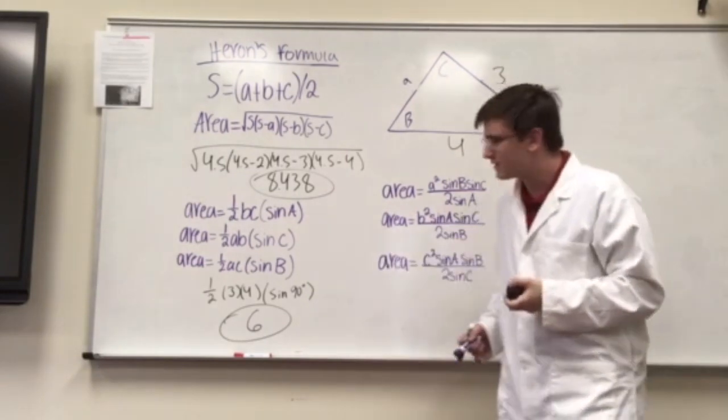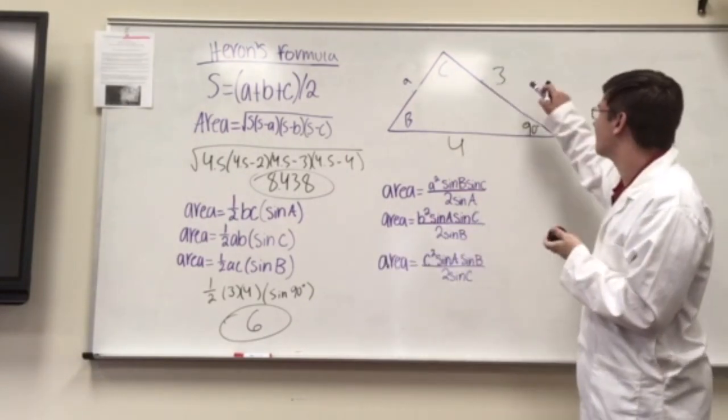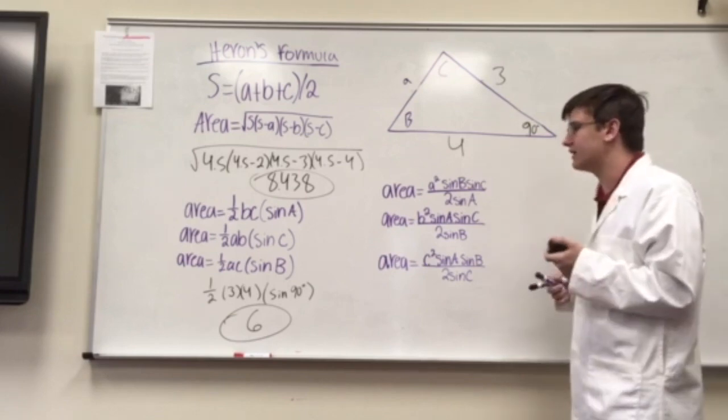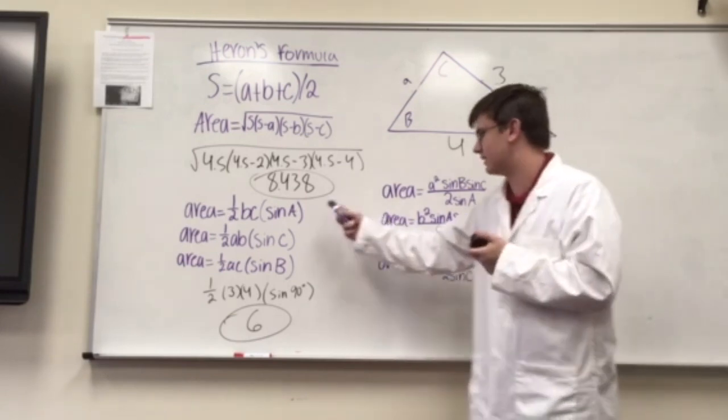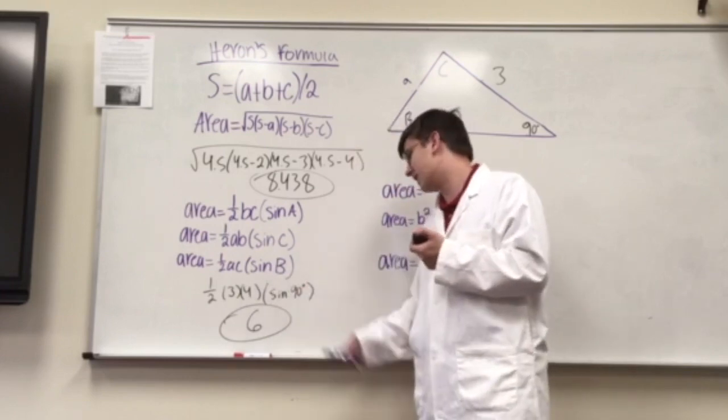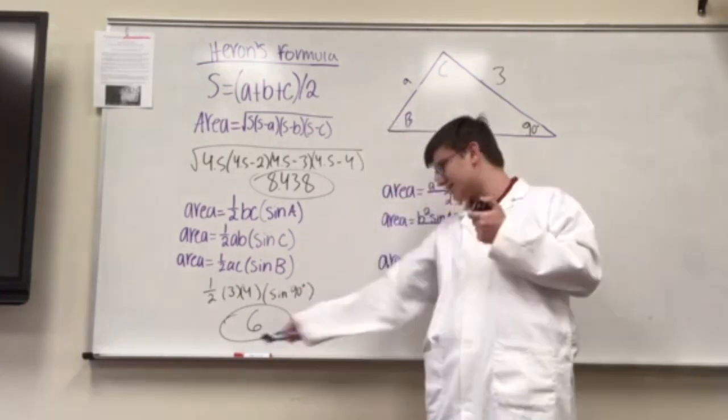Now, let's work out one of these. So, as you can see, we have the side 3 and the side 4 and the angle 90 degrees. So, we just plug that into these formulas: 1 half times 3 times 4 times the sine of 90. And there you have it. The answer is 6.